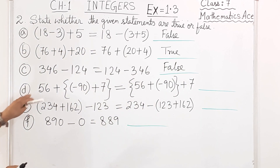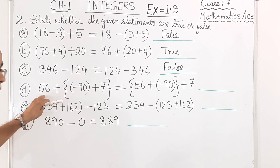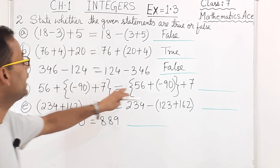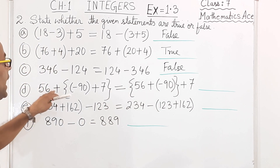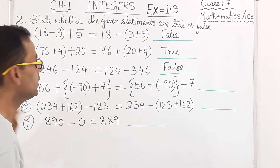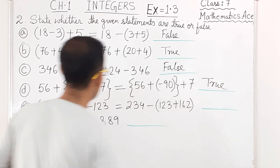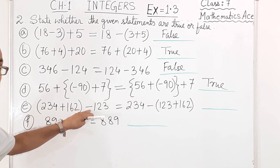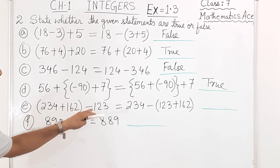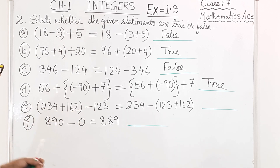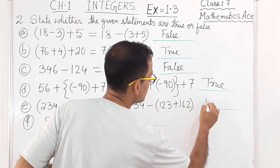Number D: three integers are there, order is changed — first one kept alone, second and third together on one side; first and second together and third alone on the other side. This is the associative property of addition, which holds true — so write True. Number E has subtraction signs, making it the associative property of subtraction, which does not hold true — so write False.